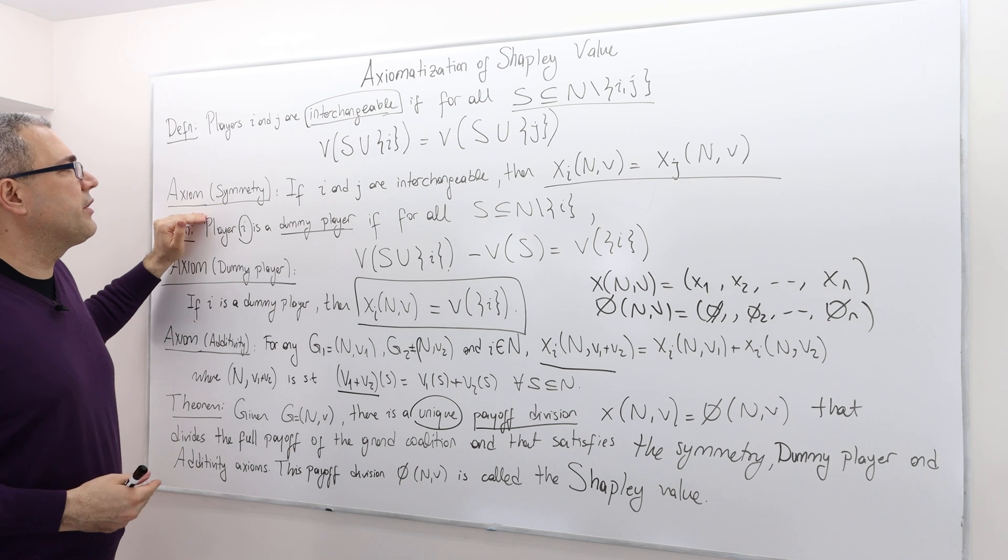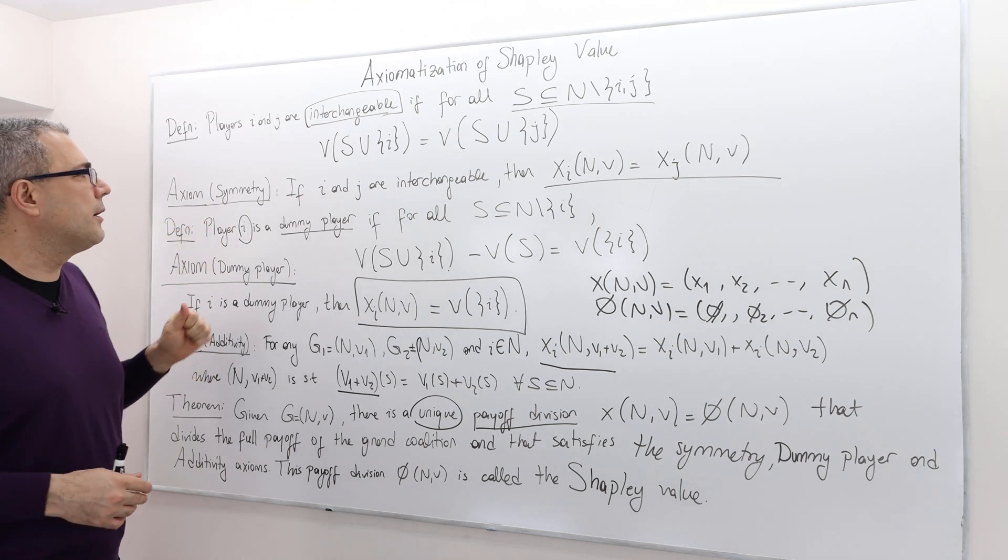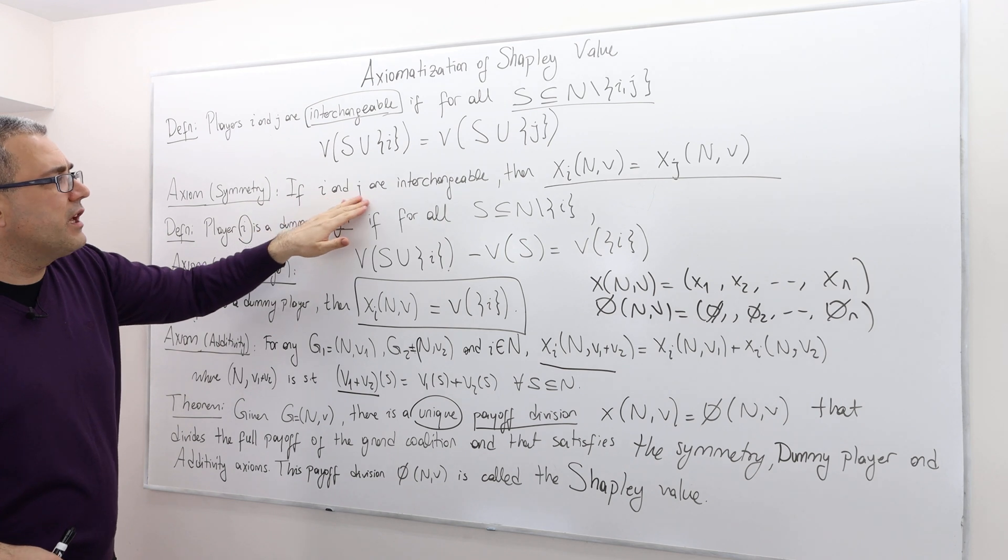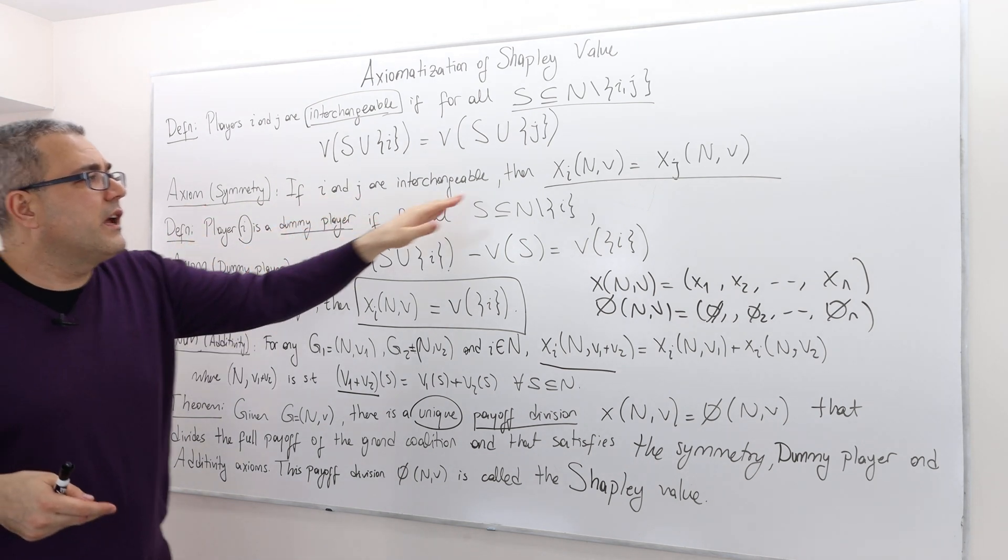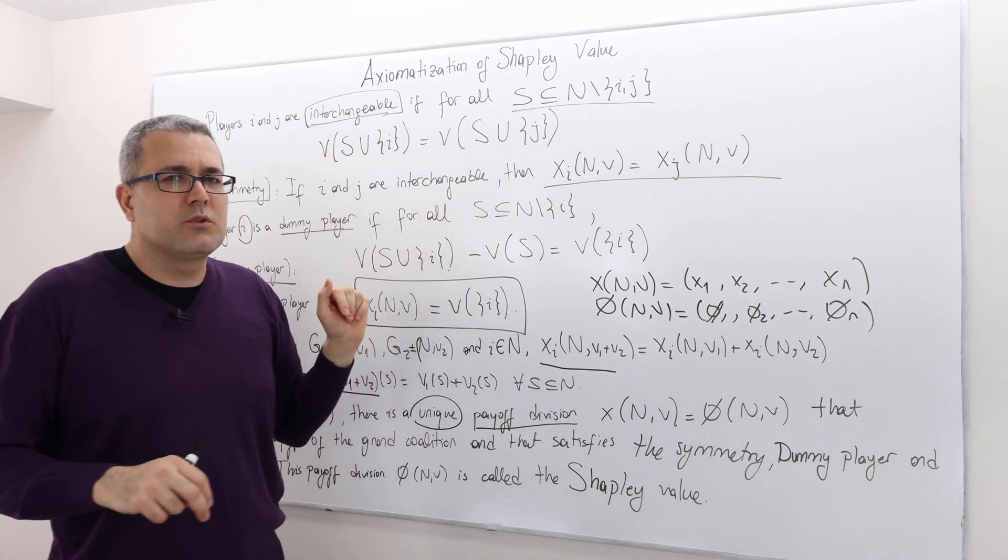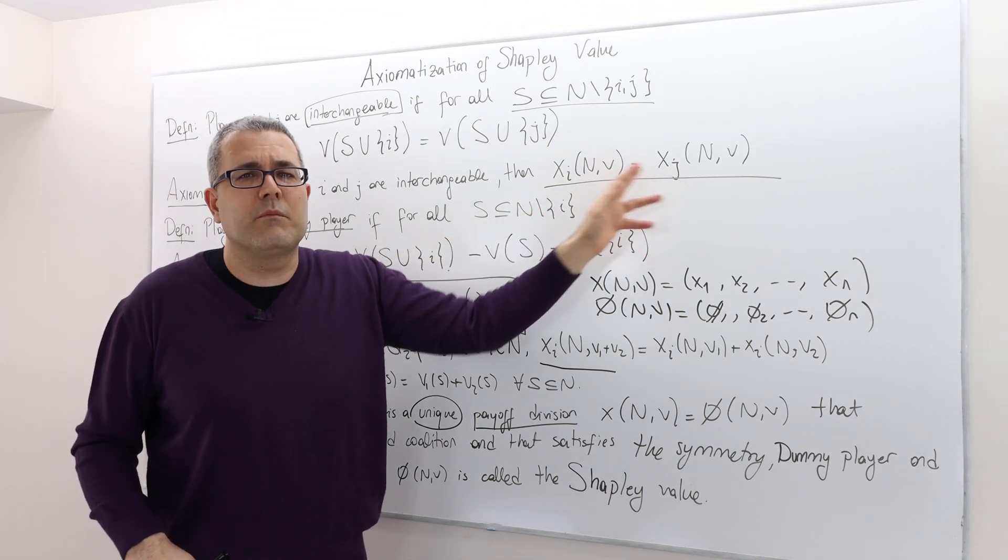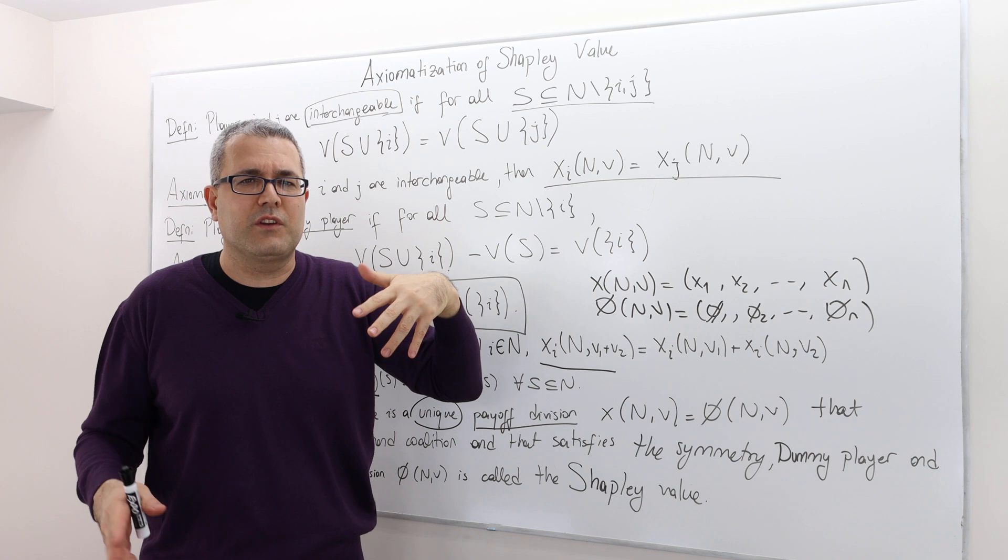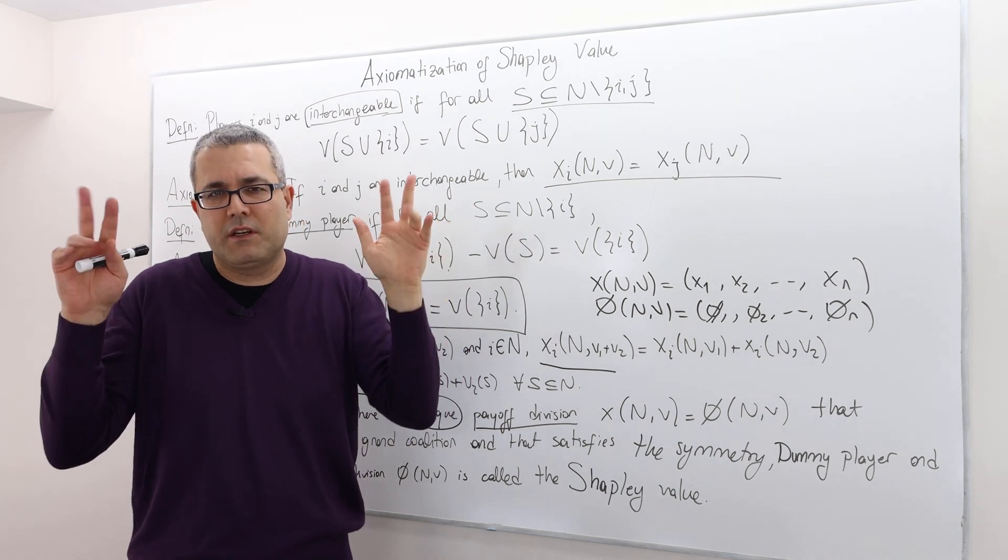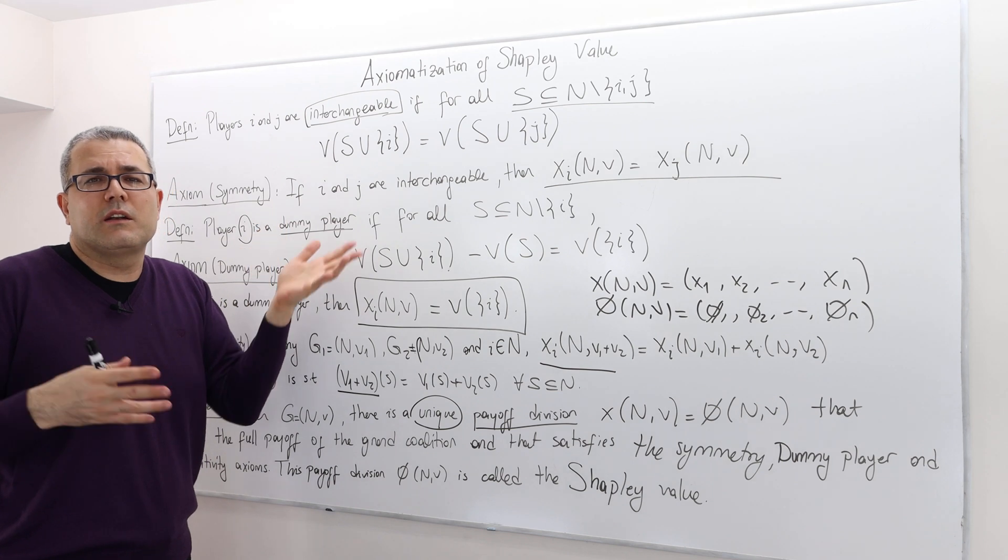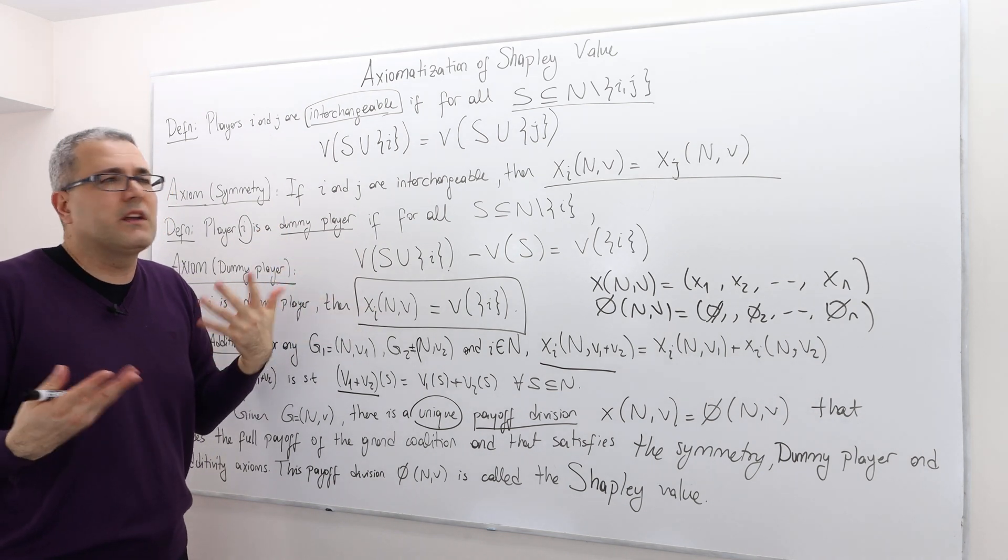Well, the symmetry axiom basically underlines this and it says if player i and j are interchangeable, well, then they're equivalent, you know, code and code. And so their payoffs must be the same. xi must be equal to xj. So if they're sort of in that sense interchangeable, well, then their payoffs at the end of the game must be the same.